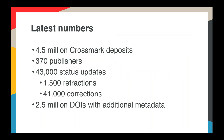Before I finish, here's where we're at with Crossmark: there are 4.5 million DOIs with Crossmark information, representing 4.5 million Crossmark buttons on pieces of content from 370 different publishers. Within those deposits there are 43,000 status updates — of which 1,500 are retractions and just over 40,000 are corrections. 2.5 million of those DOIs have additional metadata populating the More Information box.